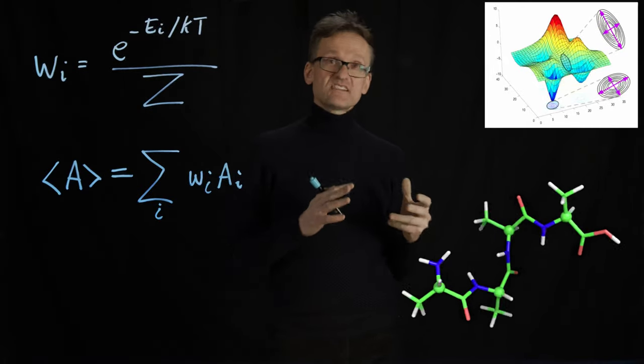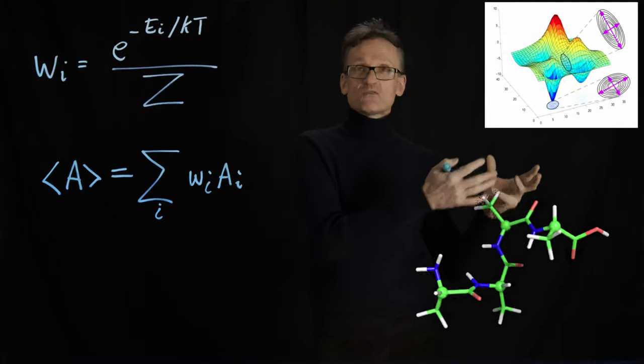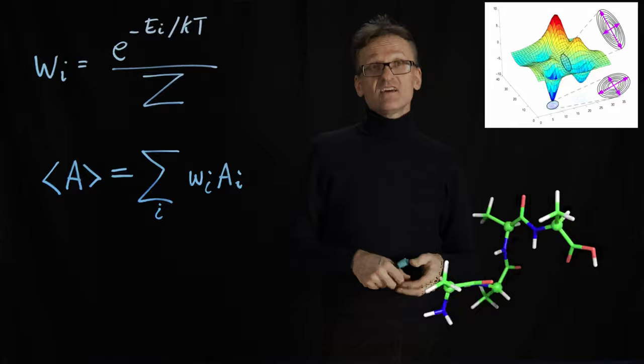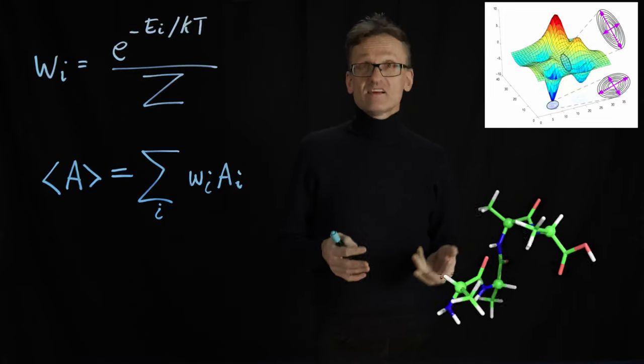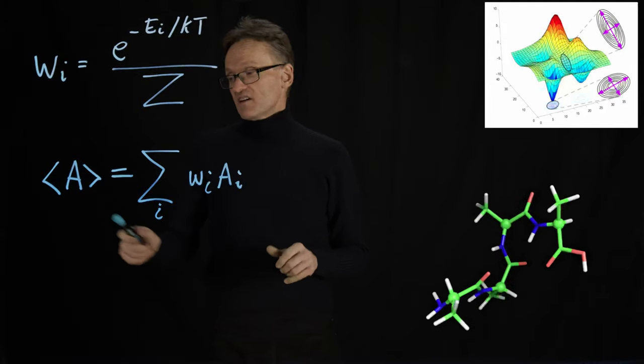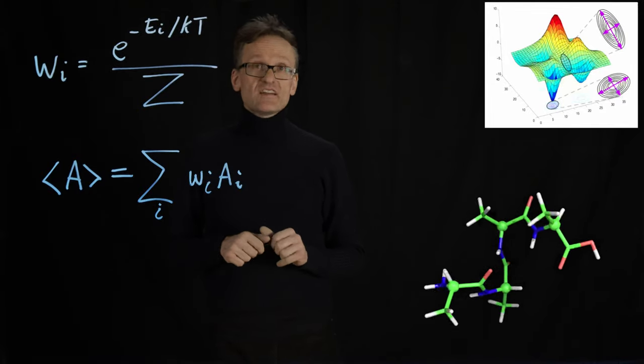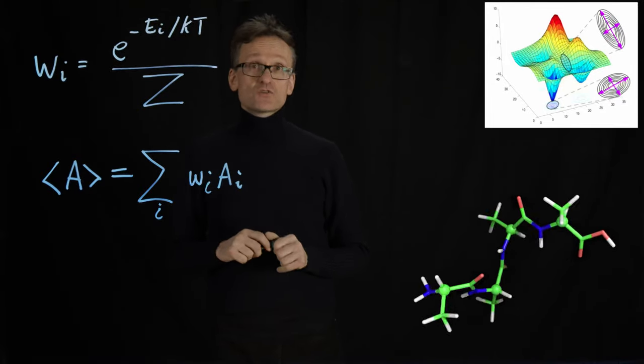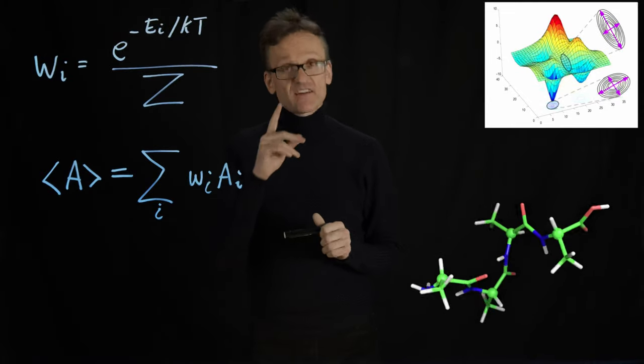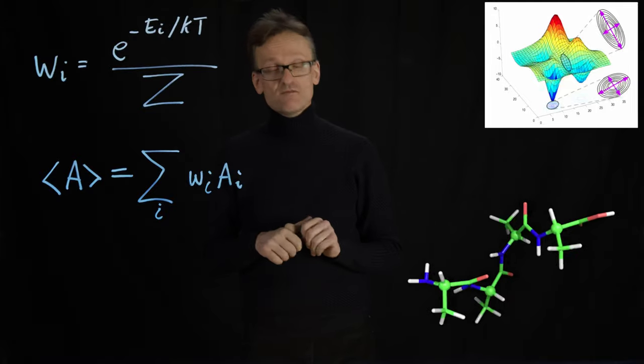As long as my simulation samples the relevant parts of phase space around the regions I'm interested in, if I do that sampling well, I'm going to get reasonably good averages here. These brackets typically indicate an average over phase space or the ensemble, and I haven't really defined what an ensemble is, and I'm going to need to do that because that influences some things.